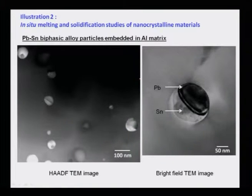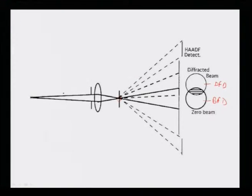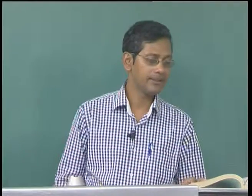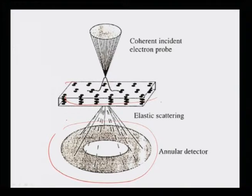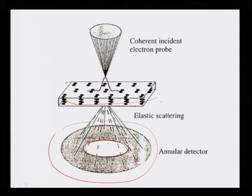Another important detector added to the STEM system is the HAADF — high-angle annular dark-field detector — developed by Crewe et al. An annular detector collects diffraction information in a disc surrounding a central circle. If this annular detector is placed at a very high angle relative to the transmitted beam, it collects information that reveals atomic number contrast.